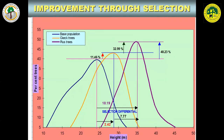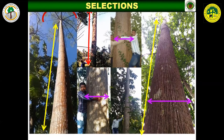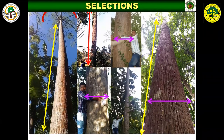These are the kinds of plus trees we have in Melia dubia. Compare them with those early photographs of unimproved plantations. These trees exist in natural populations and in our stands. We just need to screen them, analyze them, and interpret results in a way that gives clear indicative results so that they can be utilized for the purpose of commercial forestry.